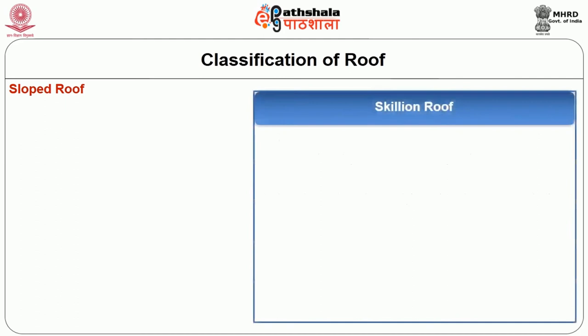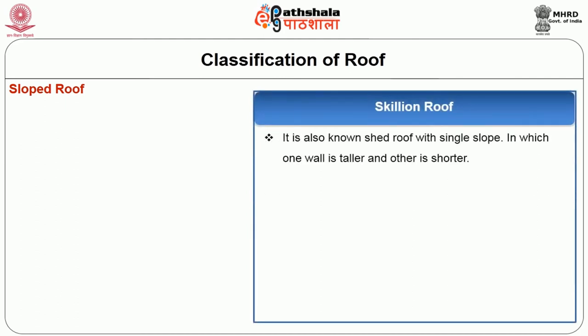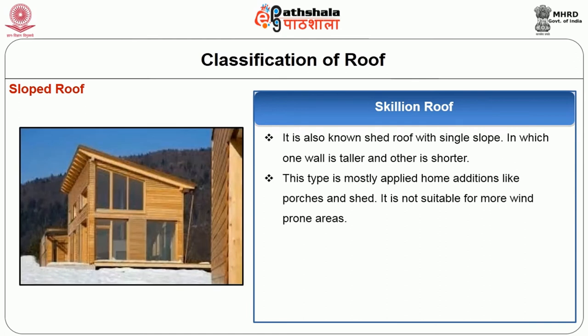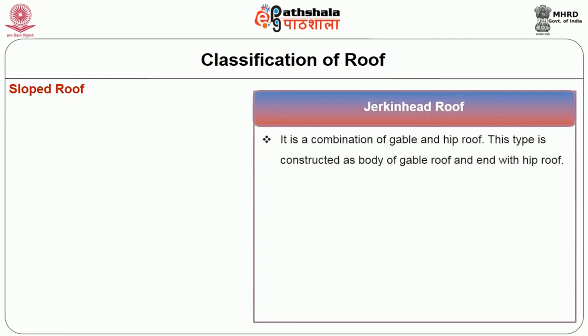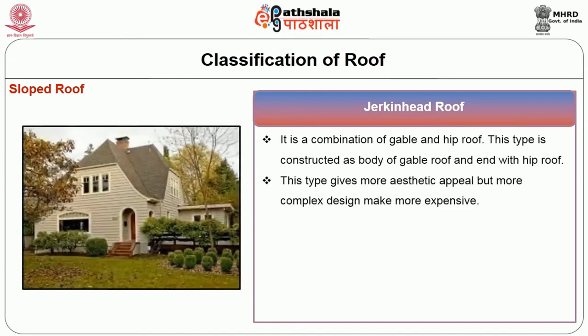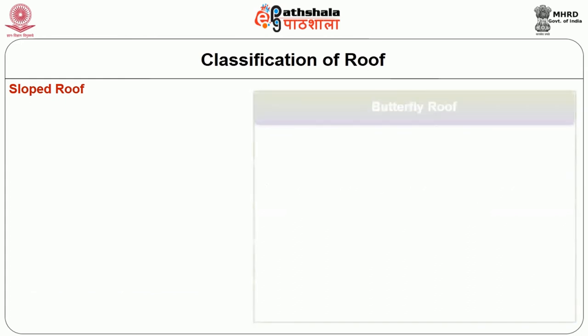Skillion roof, also known as a shed roof, has a single slope in which one wall is taller and the other is shorter. It is mostly applied for home additions like porches and sheds, and is not suitable for high wind-prone areas. Jerkin head roof is a combination of gable and hip roof, constructed with the body of a gable roof ending with a hip roof. It gives more aesthetic appeal but the complex design makes it more expensive.